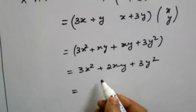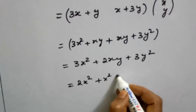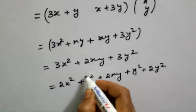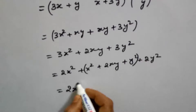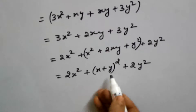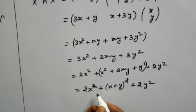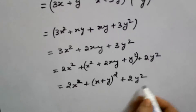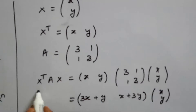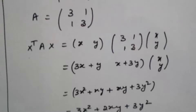We write this using the formula a squared plus 2ab plus b squared. We convert: 2x squared plus x squared plus 2xy plus y squared plus 2y squared, which simplifies to 2x squared plus (x plus y) whole squared plus 2y squared. These are square terms of real numbers, which are greater than or equal to 0. For any nonzero x and y, the value is greater than 0, satisfying x-transpose Ax greater than 0. Therefore, the given matrix is a positive definite matrix.